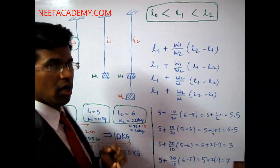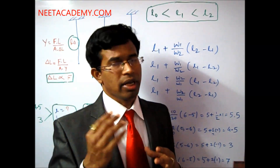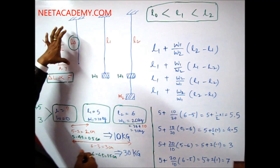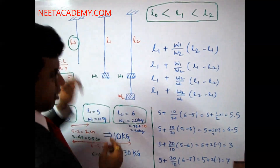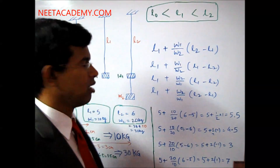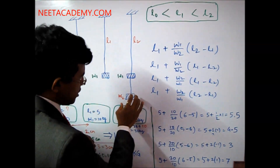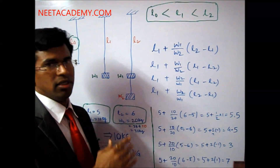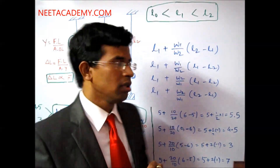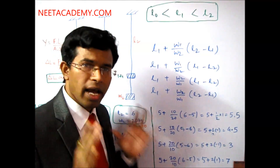I'm going slow because I want to explain properly. If you are thorough with this approach, you can get the answer within one minute or half a minute. The first logic: you are given a wire of length l0. When you add weight w1, it stretches, so l1 must be greater than l0. When you add additional weight w2, it stretches further, so l2 must be greater than l1. Therefore: l0 < l1 < l2.